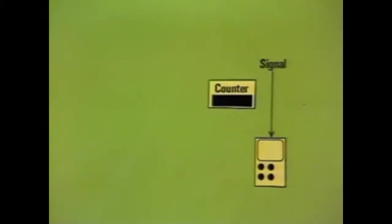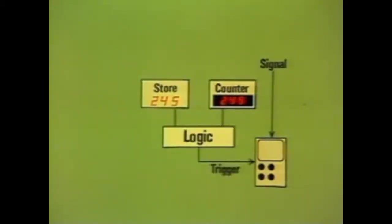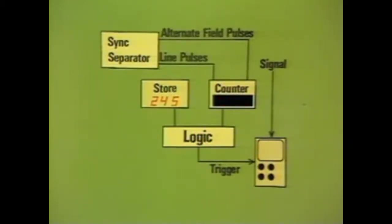The second demonstration facility is the display of the waveform of an individual line. In order for the oscilloscope to display the correct line, we have to make sure that the scope is triggered at the correct instant. Suppose we want to display the waveform of line 245 — a pulse is needed to trigger the scope after 245 lines of each picture. An electronic counter counts the line sync pulses, and the number of the required line is stored as a binary number in the electronic store. When the count reaches the value in the store, a logic circuit produces the required trigger pulse. The counter has two inputs: one for line sync pulses, and one for pulses at the start of alternate fields which reset the counter to zero. In this way, a trigger pulse is produced each time line 245 is traced on the picture screen.